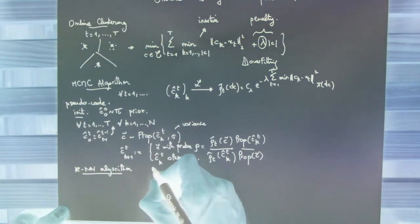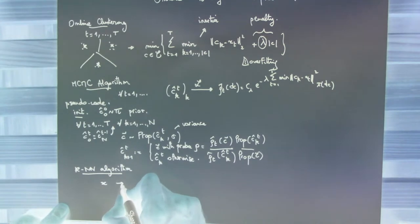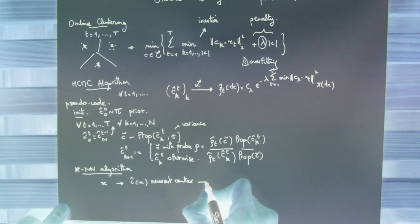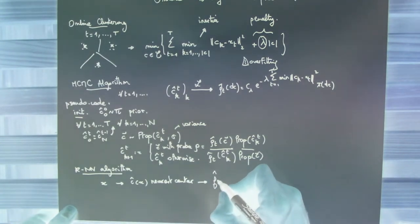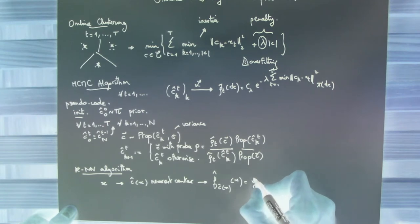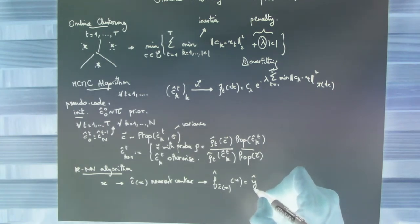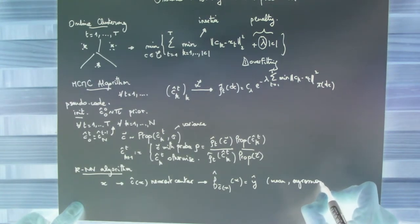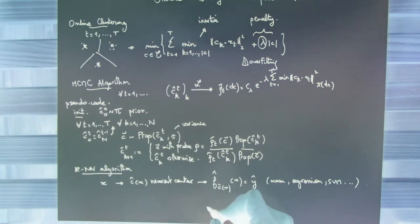For a new input variable X, we return the nearest center C hat X, and then choose your favorite algorithm in the Voronoi cell associated to this cluster. The easiest thing to do is to return the mean of the response variable Y in this Voronoi cell, based on your training sample H time T.